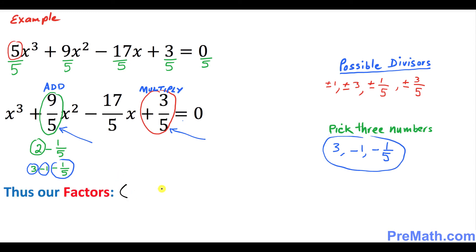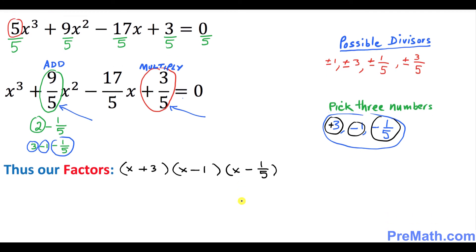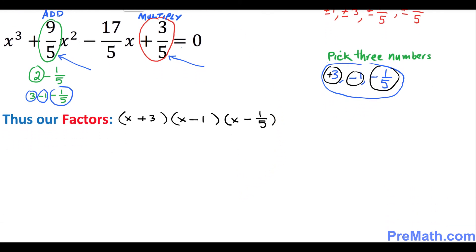Our factors are three parentheses each with x. Put positive 3 here, negative 1 here, and negative 1 over 5 here. Since we have the fraction 1 over 5, drag the 5 to the front. So the factors become: x plus 3, times x minus 1, times 5x minus 1. These are your factors.